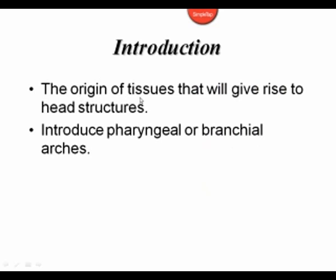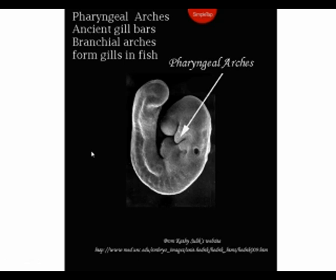We'll first talk about the origin of the tissues that give rise to the head structures, and to do that, we need to begin our discussion with an introduction of the pharyngeal or branchial arches. The pharyngeal arches, as they're called in the human, are located on either side of the foregut. These pharyngeal arches have been termed the ancient gill bars, the branchial arches; in fish, they form the gills. But in humans, they have a different fate, and so we'll talk about the fate of the pharyngeal arches.